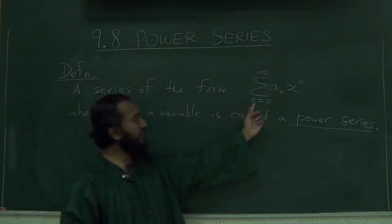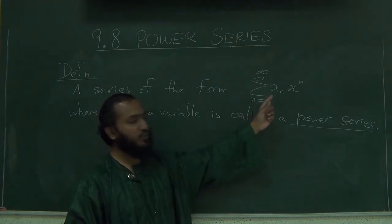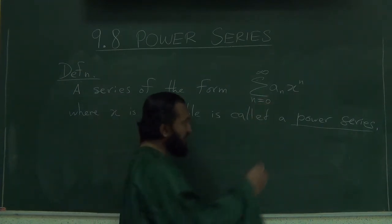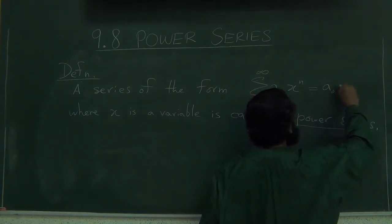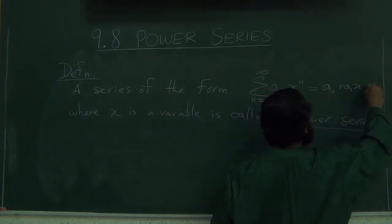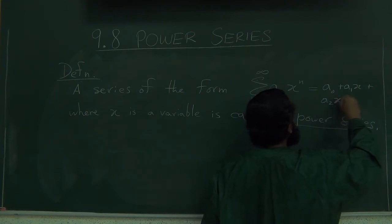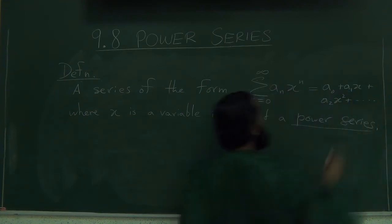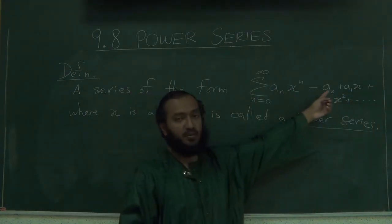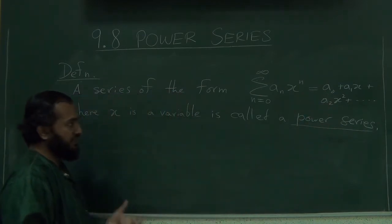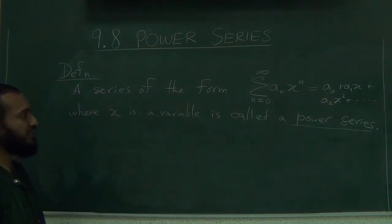Notice also that the summation starts at n equals 0, because we want that constant term. So this looks like a0 plus a1x plus a2x squared plus... So we do want the constant term in general, although for some specific cases they may not be, some powers may not exist. But in general we want the thing to start at n equals 0.